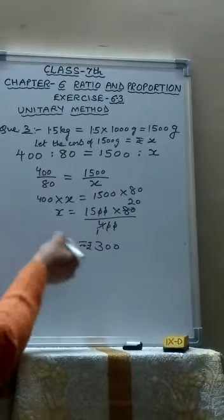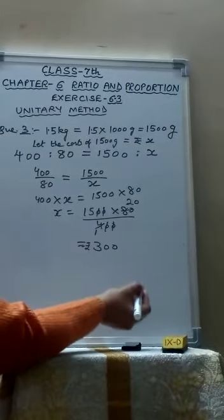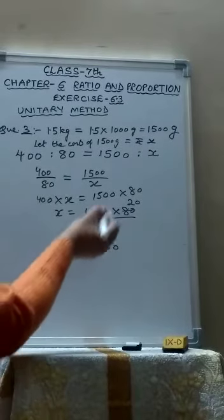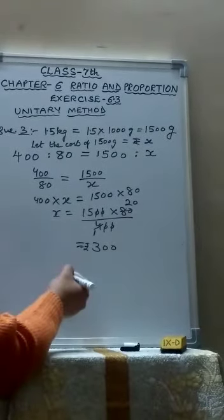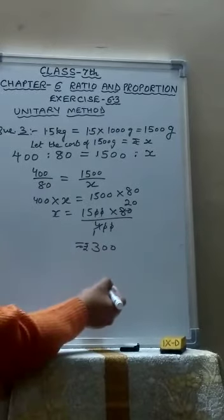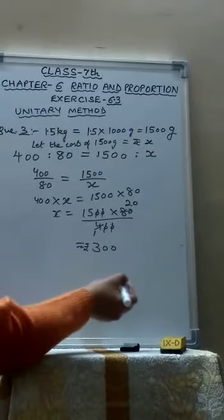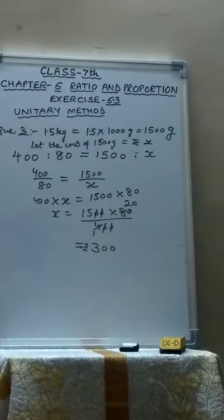Now children, you can use this method also or you can use unitary method. Like cost of 400 grams equals to rupees 80, cost of 1 gram is 80 upon 400, and cost of 1,500 gram is 80 upon 400 multiplied by 1,500. So you will get the same answer.